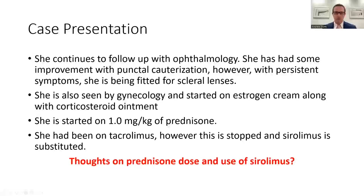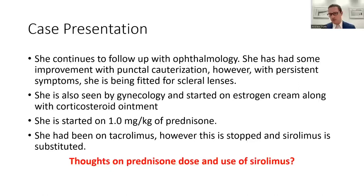She continues to follow up with ophthalmology. She has some improvement after punctal cauterization; however, with persistent symptoms, she is being fitted for scleral lenses. She's seen by gynecology and started on estrogen cream along with a corticosteroid ointment. She's started on one mg/kg of prednisone. She had been on tacrolimus; however, this is stopped and sirolimus is substituted. Sirolimus has shown that it has more effects on T regulatory cells and can augment T-regs, perhaps playing more of a role in chronic GVHD. So this is actually a practice that I also do, substituting tacrolimus for sirolimus.